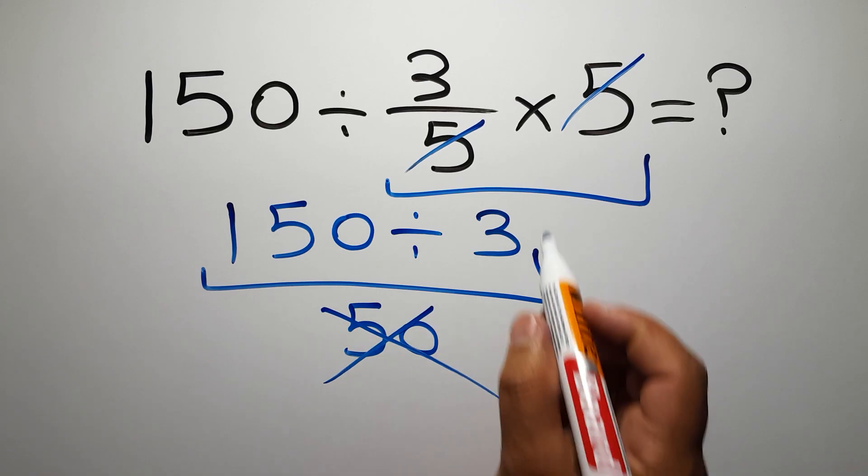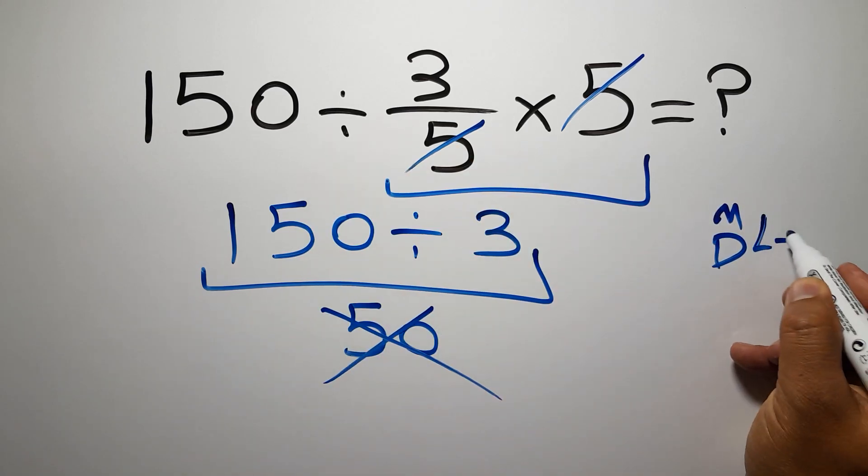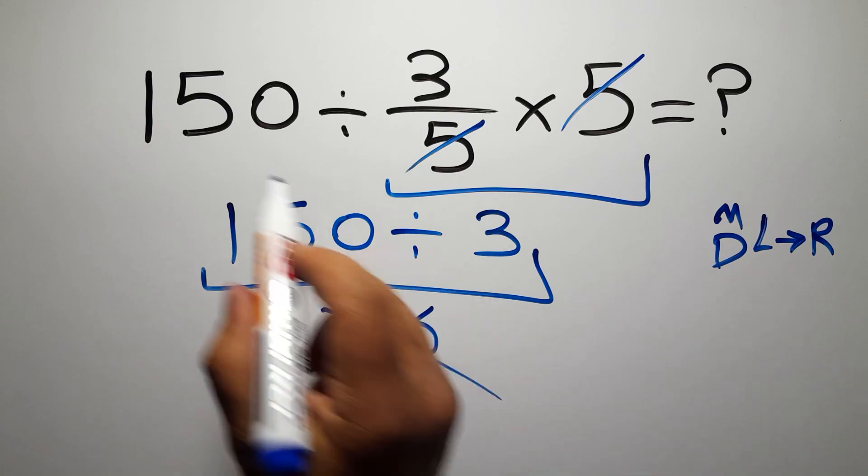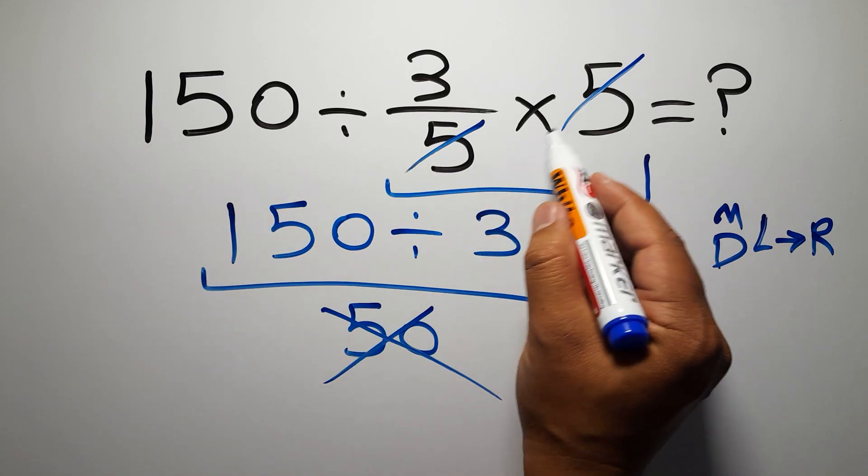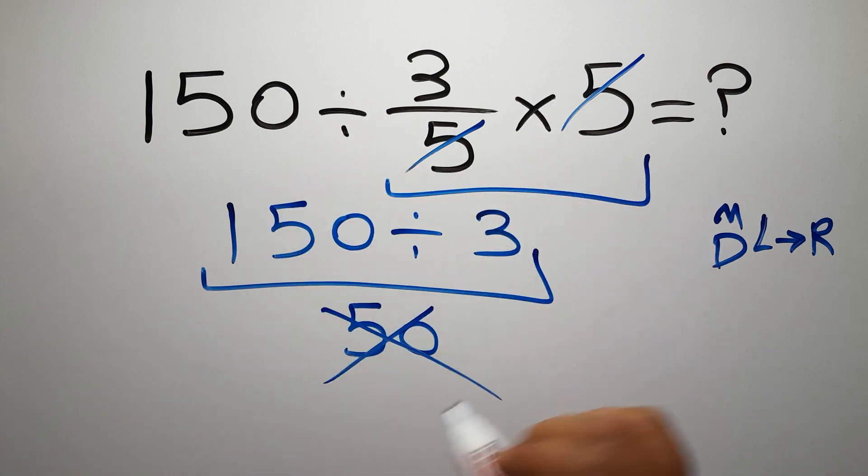So here, first we have to do this division, not this multiplication. If you do this multiplication before this division, it is wrong.